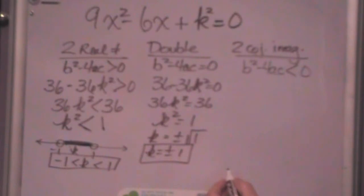Now, on the conjugate imaginaries, 36 minus 36k squared less than 0, you're going to get 36k squared is greater than 0. Oh, sorry, greater than 36, because I put 36 over there. So now, divide by 36, k squared is greater than 1.